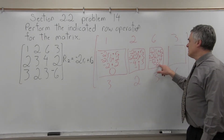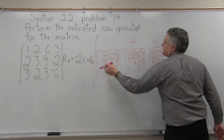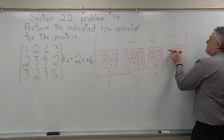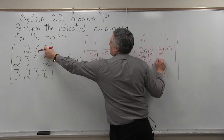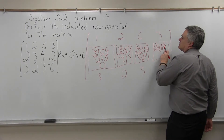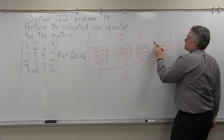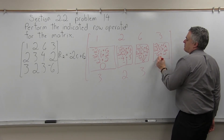Pay attention to the negatives — don't lose the negative. One final box to fill in. The equation is negative 2 times row 1 plus row 2. Negative 2 times row 1 in this last column is negative 2 times 3, plus what's in row 2 in that last column, which is positive 2. So negative 2 times 3 is negative 6, and negative 6 plus 2 is negative 4. Don't lose the negative.